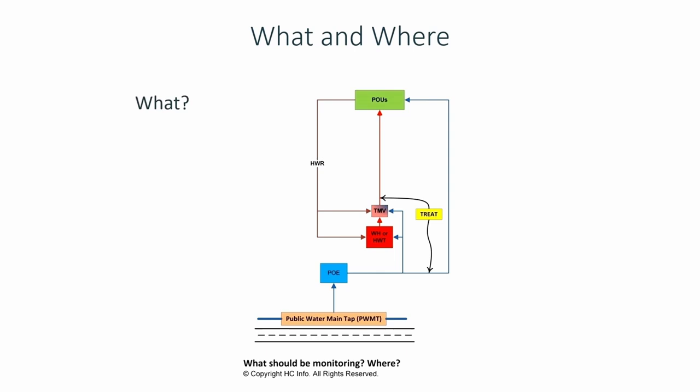You can probably guess some of these, because if you've read much at all about Legionella, you know it's affected by temperature, by the levels of disinfectants, and the disinfection effectiveness — for some disinfectants, especially chlorine, and to some extent chlorine dioxide, monochloramine, and copper-silver ions — are affected by pH. So pH is commonly recommended as well. What other parameters can you think of that might give you an indication of how to manage your water systems for Legionella control? Maybe sediment — like particulate?